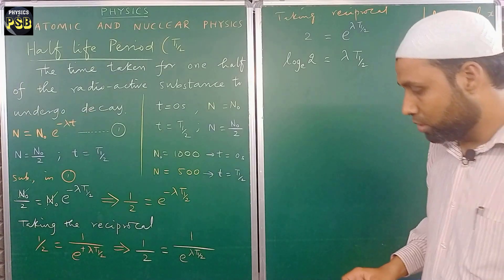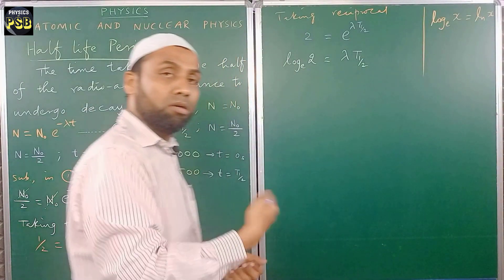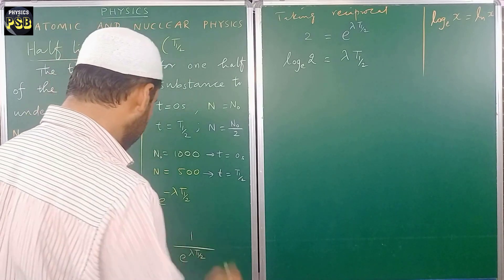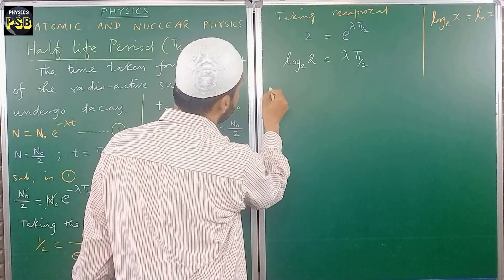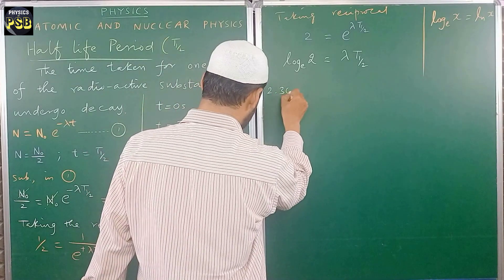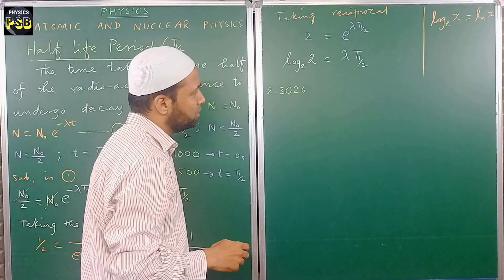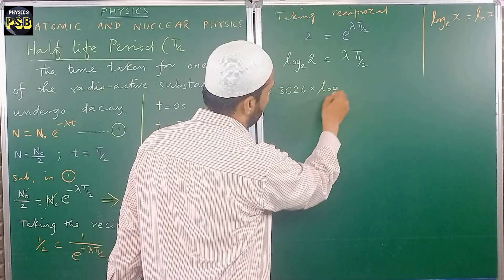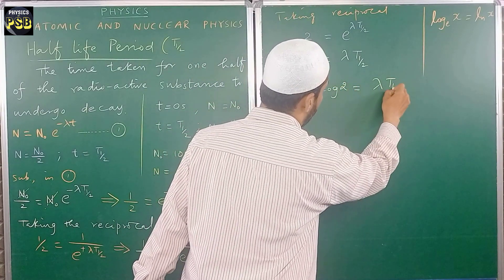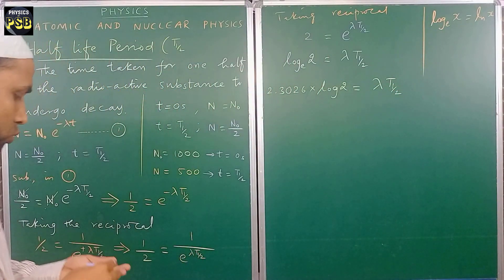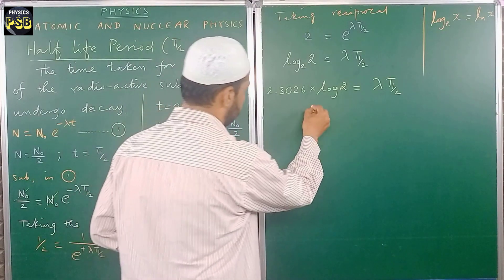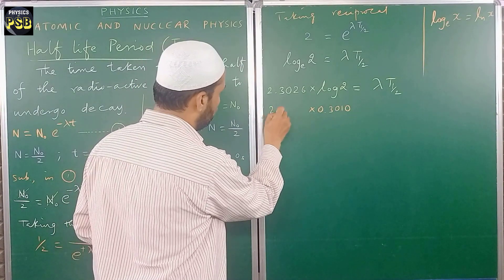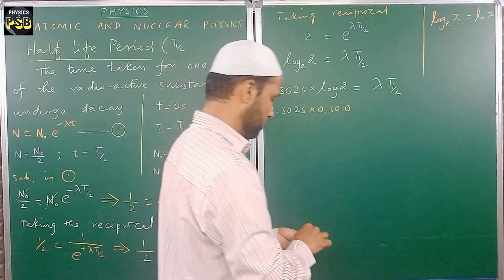Right. Then now I will convert this natural log into common log. How it can be done? It's too simple. To do so, here it is multiplied with 2.3026. When you multiply 2.3026, it is nothing but log 2, which is 0.3010 multiplied with 2.3026.